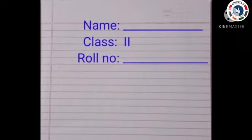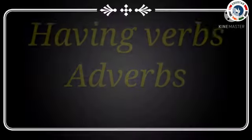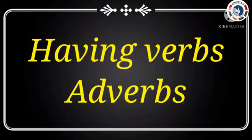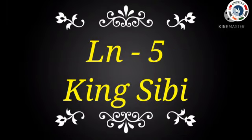Children, for the term 2 exam, you are going to write in the ruled paper. That is why you have to write only the answer to the question. Today, I am going to revise having verbs and adverbs in the grammar portion, and Lesson 5, King CB, in the literature part. Now let's start today's revision.